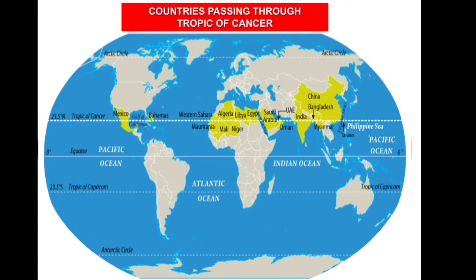The Tropic of Cancer passes through 17 countries in the world. They are Mexico and the Bahamas in North America; Western Sahara, Mauritania, Mali, Algeria, Niger, Libya, and Egypt in Africa; and Saudi Arabia, UAE, Oman, India, Bangladesh, Myanmar, China, and Taiwan in Asia.